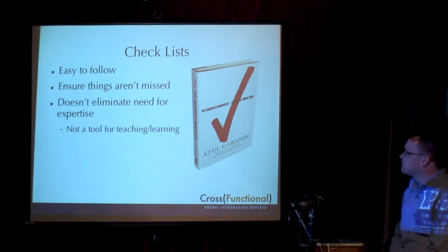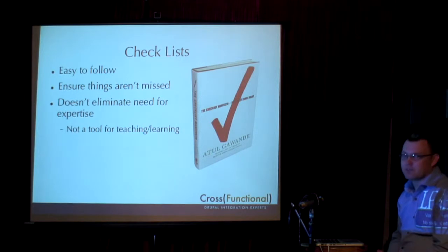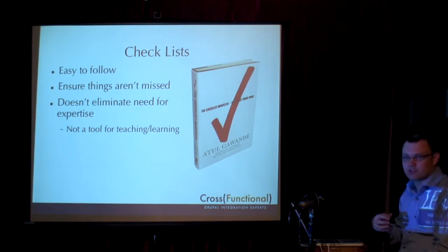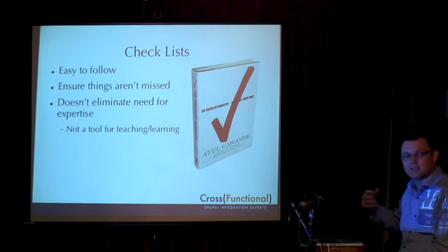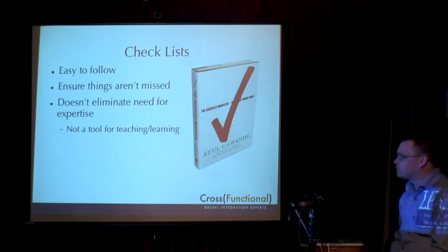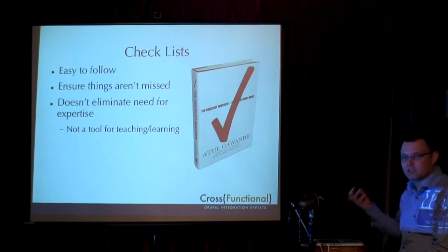The big thing I'm going to touch on tonight is checklists. Checklists are easy to follow if they're done right. The main purpose of checklists is to ensure that things are not missed — even if you've got somebody who's an expert in quality assurance, checklists ensure things don't get missed and can be repeated consistently. But checklists don't eliminate the need for expertise. They're not a teaching tool — if you don't know how to do these things, a checklist won't make you an expert, but it'll give you some indication of what to consider.